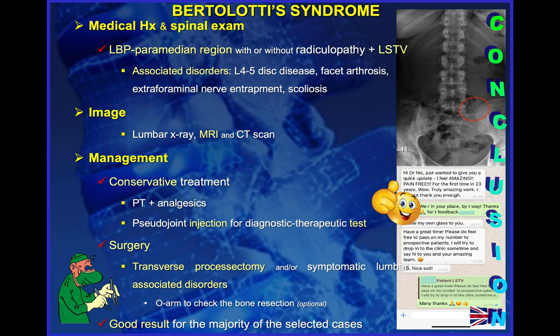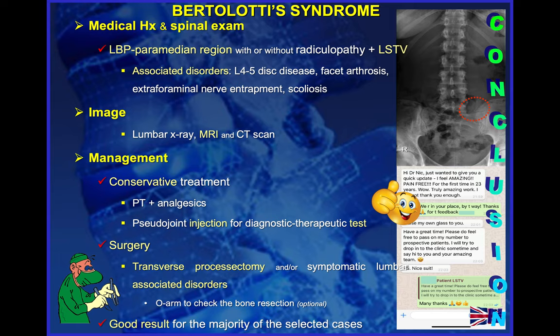In summary, patients with typical lower back pain at the paramedian region associated with a transitional vertebra and enlarged transverse process, especially with a pseudo-joint — so Castelvi type 2 or type 4 — are potential candidates for transverse processectomy. Always pay attention to possible associated disc disease, which may also be surgical, and to far-out syndrome. Obtain good imaging: X-ray, MRI, and CT scan. If there is no response to conservative treatment, propose the pseudo-joint injection test as a pre-test before surgery. If the patient has temporary relief, explain that this is the type of relief you are aiming for with the surgery. If the patient agrees, proceed with transverse processectomy and potentially also operate on associated disorders if they are symptomatic.